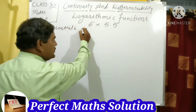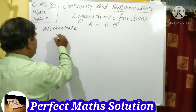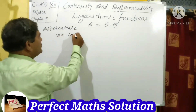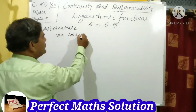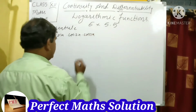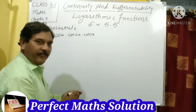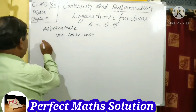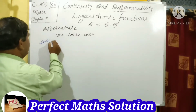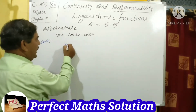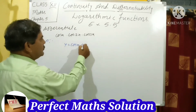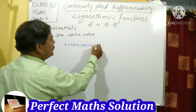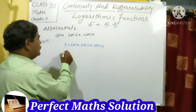Differentiate cos x · cos 2x · cos 3x. Students, you have to find dy/dx. So I am taking the solution: y is equal to cos x · cos 2x · cos 3x.